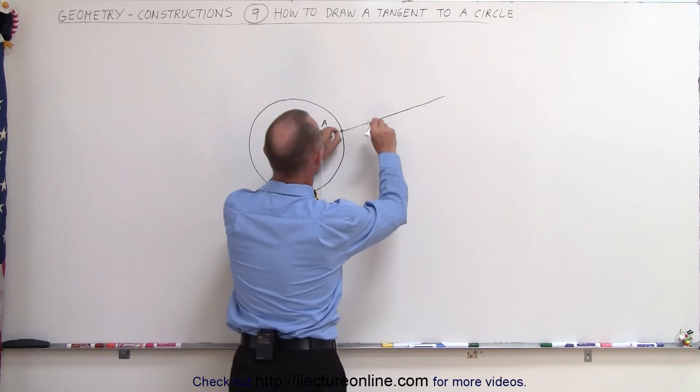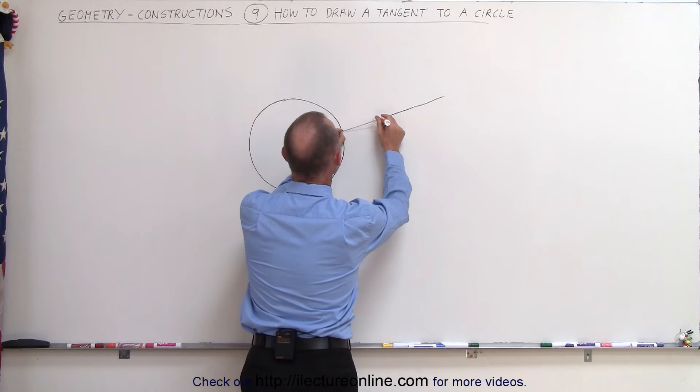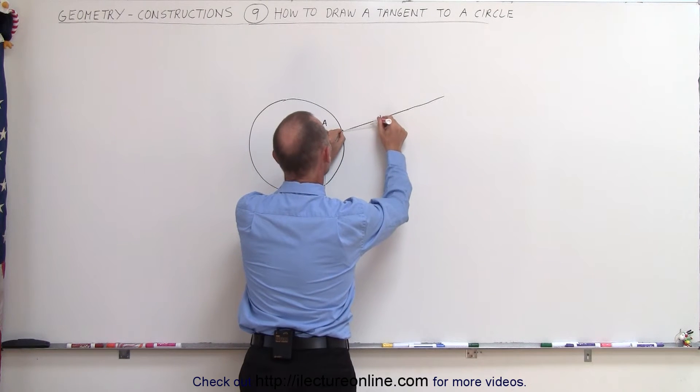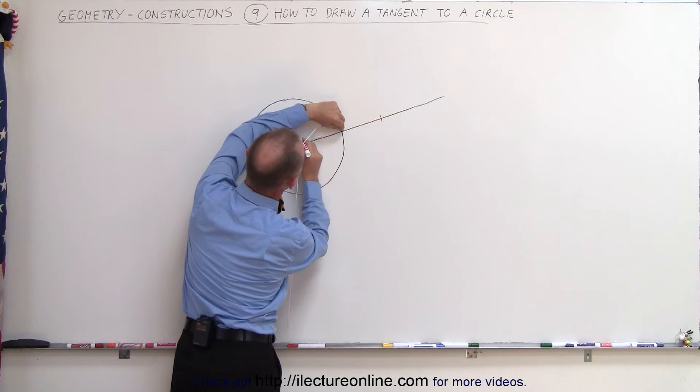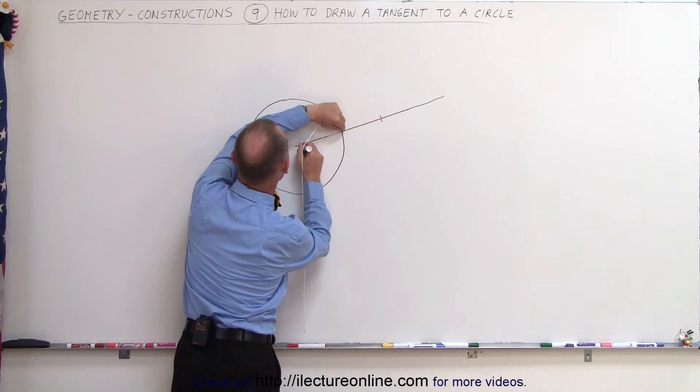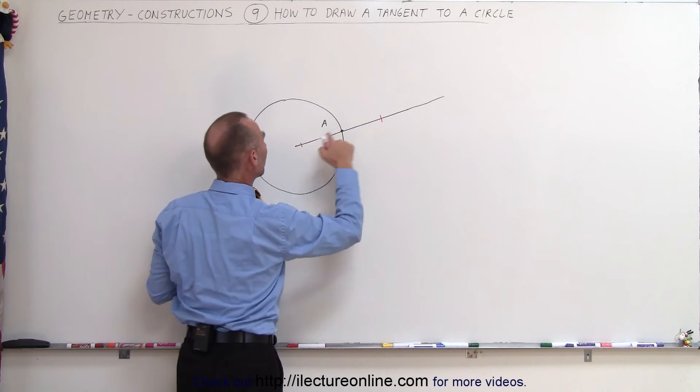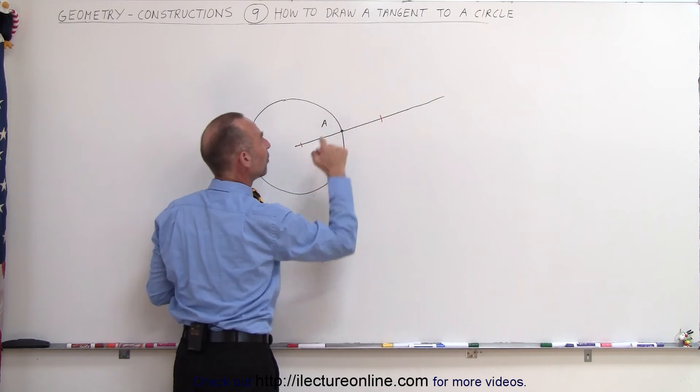So what I want to do is I want to find two points on this line equidistant from point A. So there's my first point. And I need to turn this around. And there's my other point right there. So those two points are now equidistant from point A.